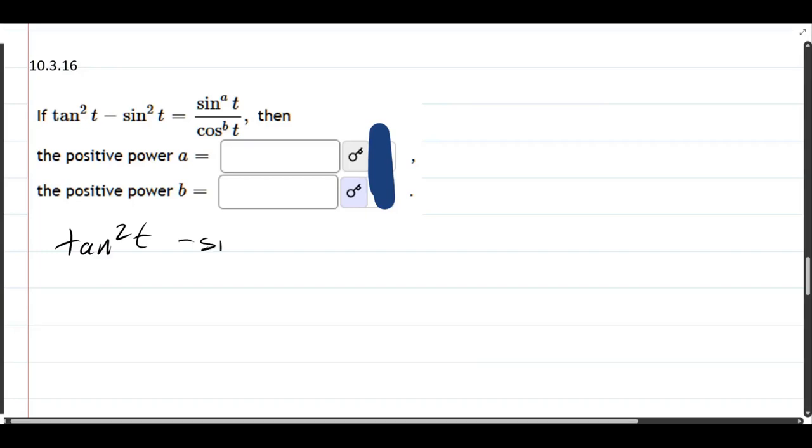We have tangent squared minus sine squared. Tangent is sine over cosine. So, we have sine, and this will be sine squared over cos squared minus sine squared t.